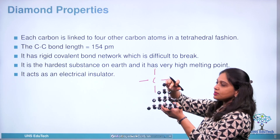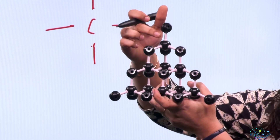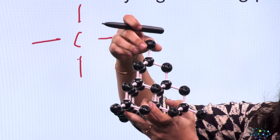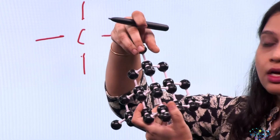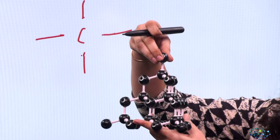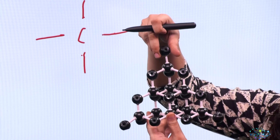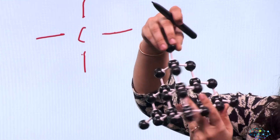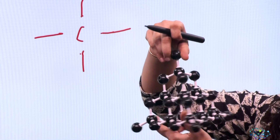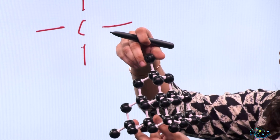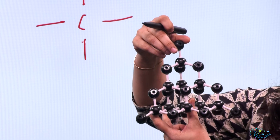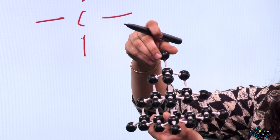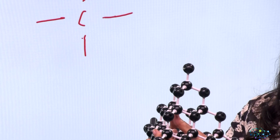In diamond, all 4 valence electrons are bonded with 4 other carbon atoms, and as a result there is no free electron. Because of this, diamond does not conduct any electricity due to the non-availability of free electrons. This is why the electrical conductivity of diamond is not possible.